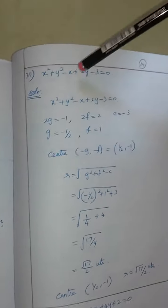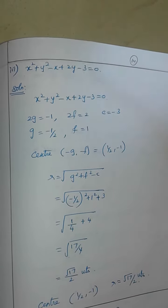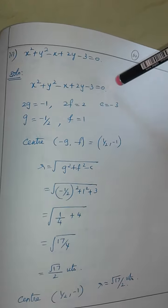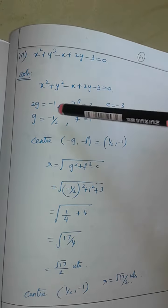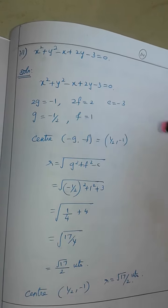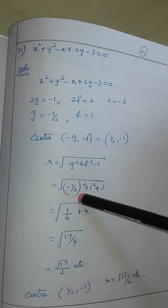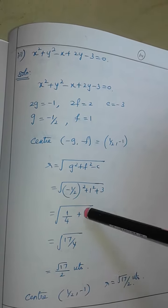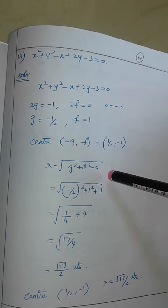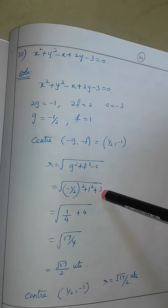This is the same general form. 2g is equal to minus 1, so g is minus 1 by 2. 2f is equal to 1, so f is 1 by 2. c is equal to minus 3. The center is (minus g, minus f), so this is plus 1 by 2, minus 1 by 2. Here the minus c in the formula gives plus 3.